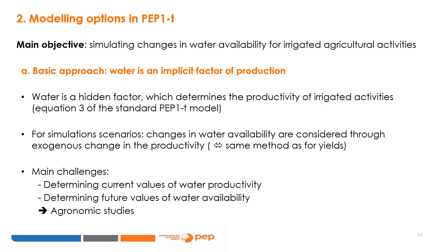A first basic approach consists of considering water resources as an implicit factor of production for irrigated agriculture, which determines the total factor productivity of these activities. Water is a hidden factor not explicitly modeled — rather, it is embedded inside the value of agricultural capital already included in equation 3 of the standard PEP1T model. Within this framework, simulation scenarios consider changes in water availability through exogenous changes in productivity, using the same method as for yields. One challenge is to estimate the link between water availability and the productivity of irrigated activities; another is to define relevant scenarios for future water availability. All these data must be taken from agronomic studies.